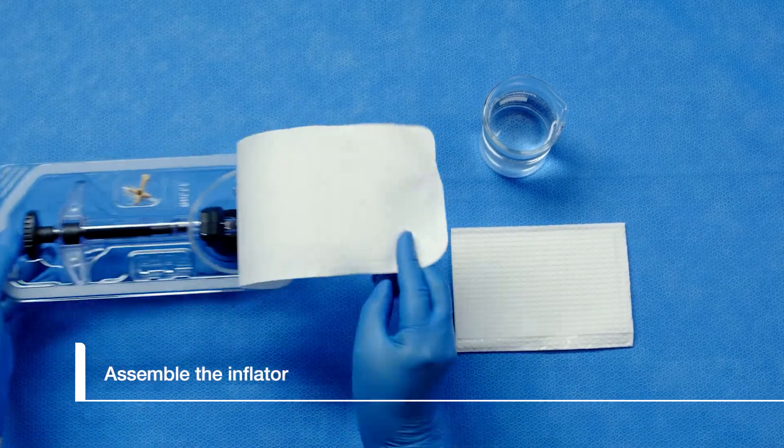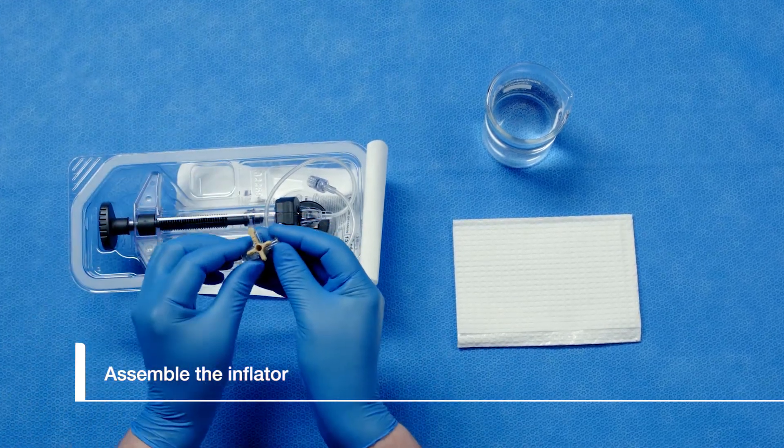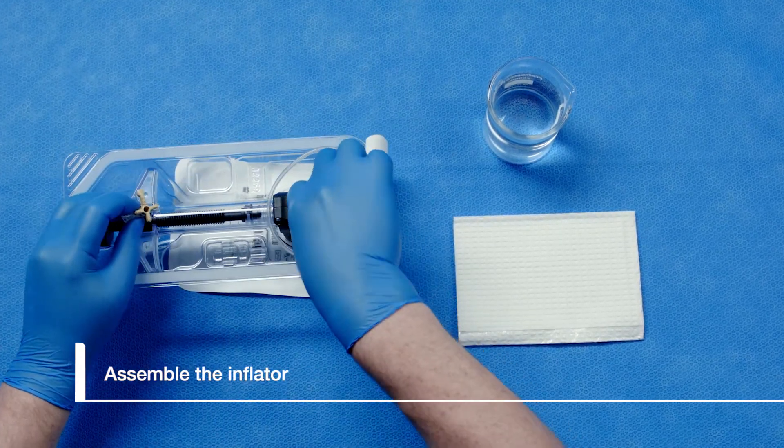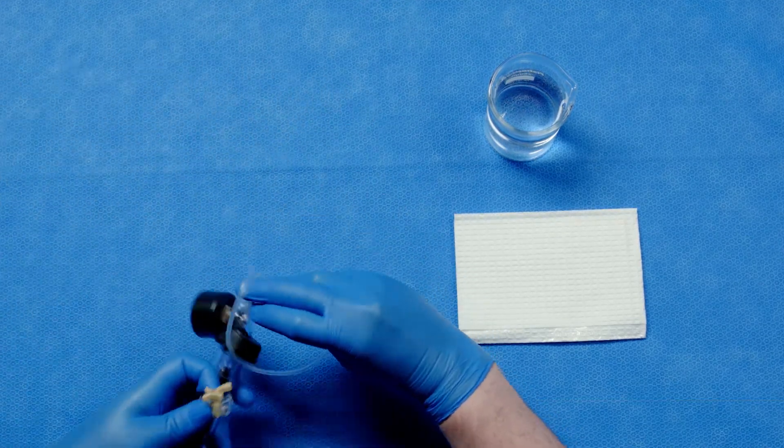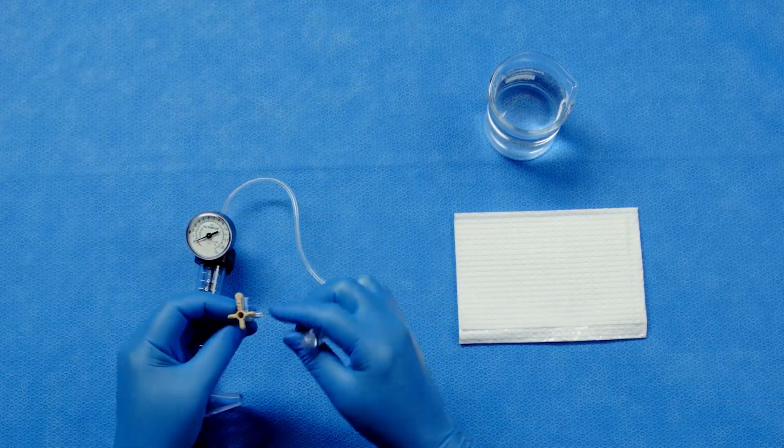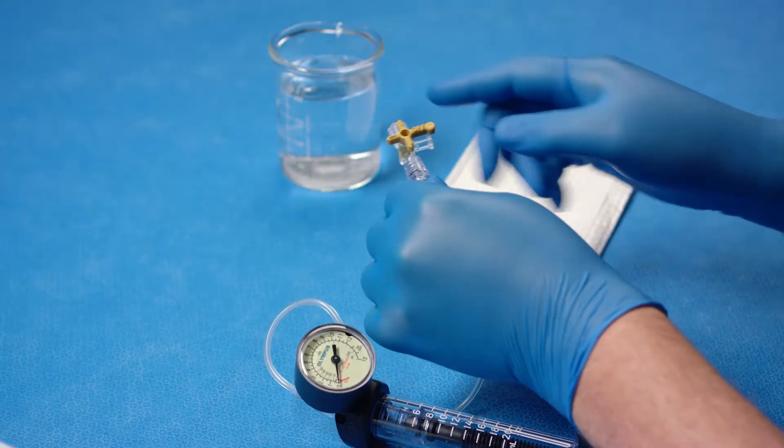To start, we will assemble the T-piece to the inflator handle. Remove the T-piece from the package and thread it onto the end of the inflator catheter. Ensure the locking switch on the inflator is in the left position so we may be able to fill the inflator.